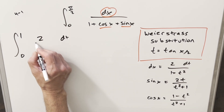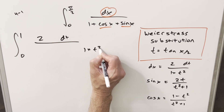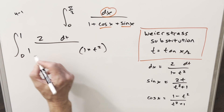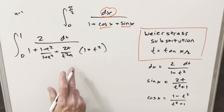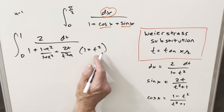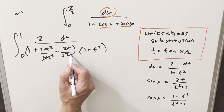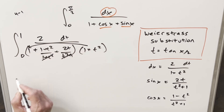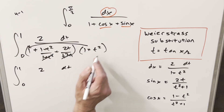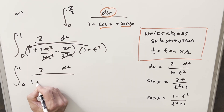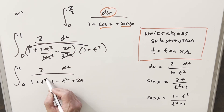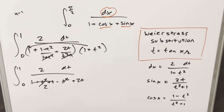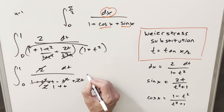We write dx as two dt, bringing the one plus t squared into the denominator. The denominator becomes one plus cosine x plus sine x, which is one plus (one minus t squared)/(t squared plus one) plus 2t/(t squared plus one). Multiplying through, a lot cancels: the t squared terms cancel and the ones combine to give two, leaving us with two dt over two times one plus t. Canceling the twos gives us the integral from zero to one of dt over one plus t.